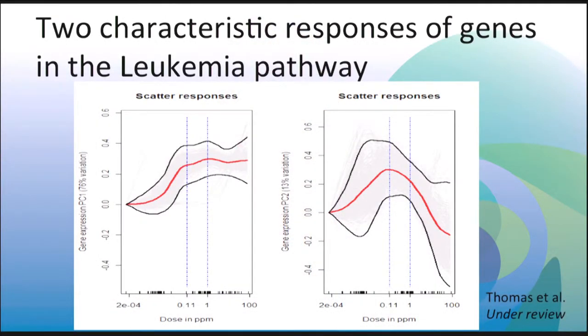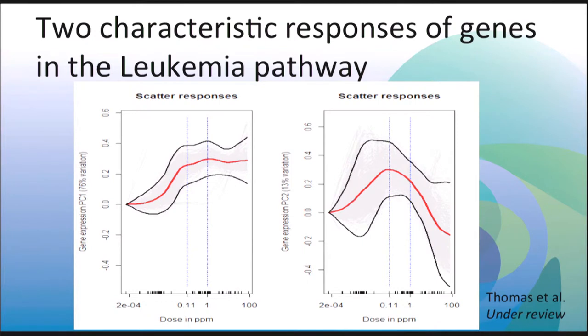Of particular interest to us was the changes we saw in the pathway associated with acute myeloid leukemia. We next asked ourselves: can we characterize the responses in the acute myeloid leukemia pathway? We used data-adaptive semi-parametric approaches to estimate two main responses of the genes in the leukemia pathway. The x-axis in both these plots corresponds to the exposure of benzene in parts per million, and the y-axis is in terms of the responses of the genes in the pathway. The red line is the mean response of the genes with increasing exposure of benzene. What should be clear from either of the plots is that we are observing responses in the leukemia pathway genes at levels below one part per million.